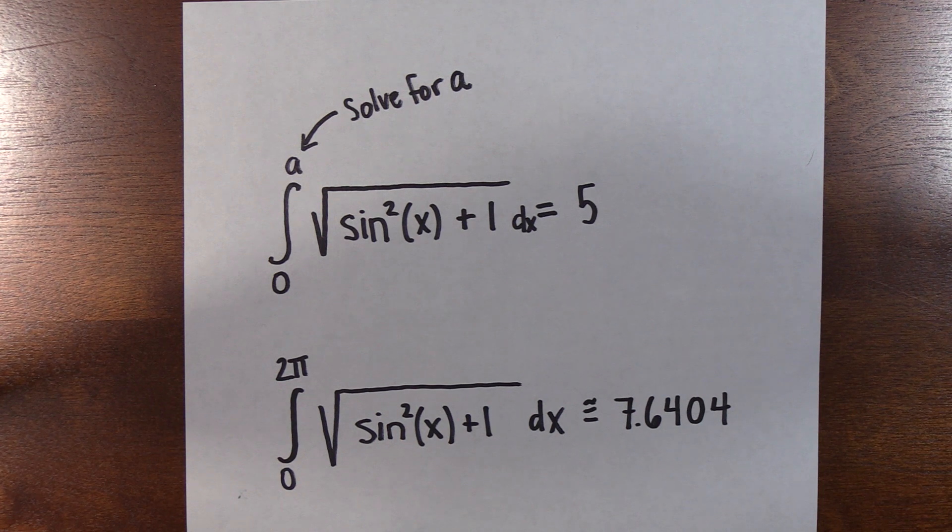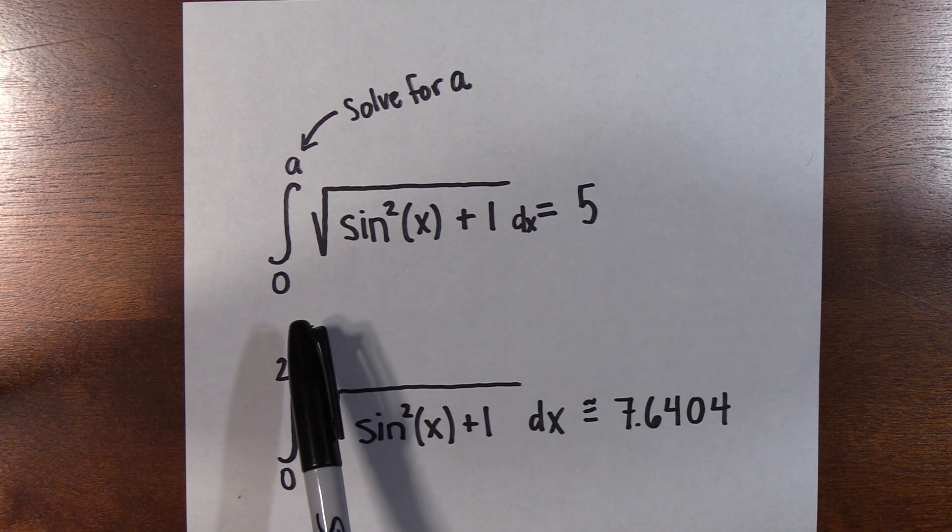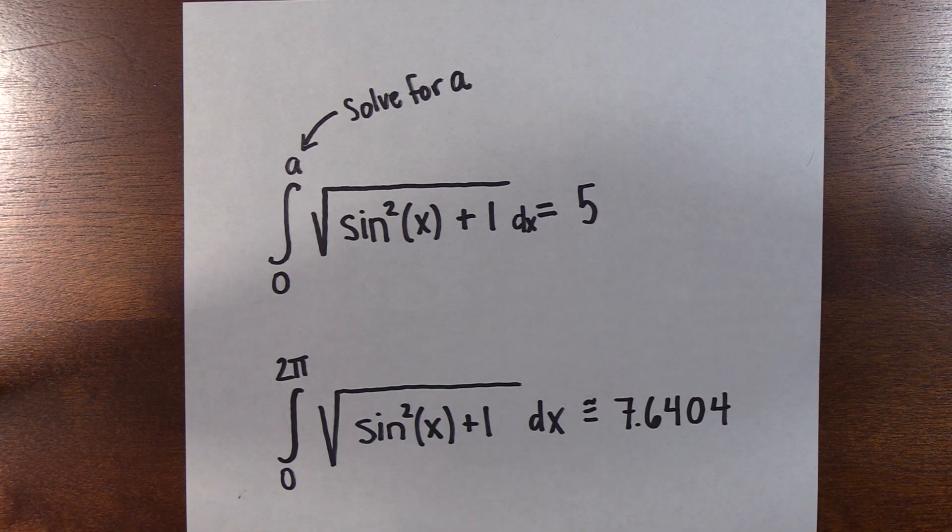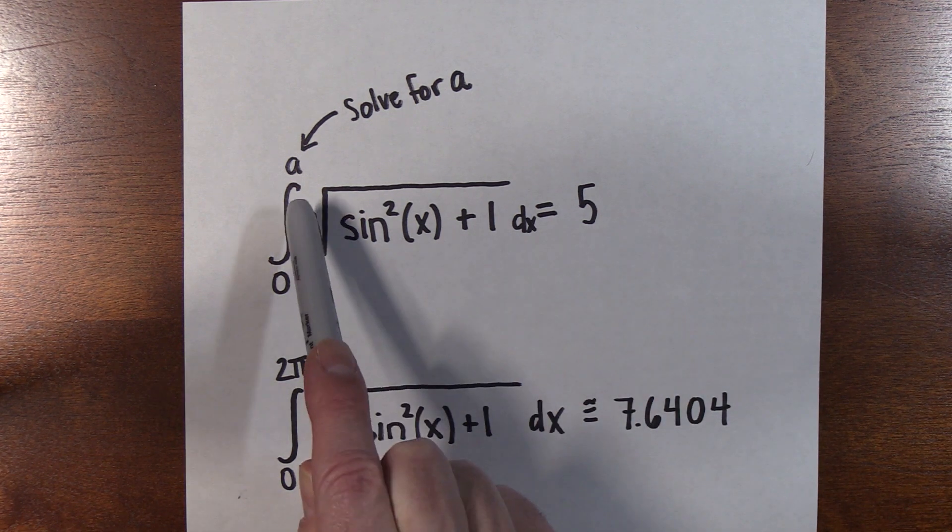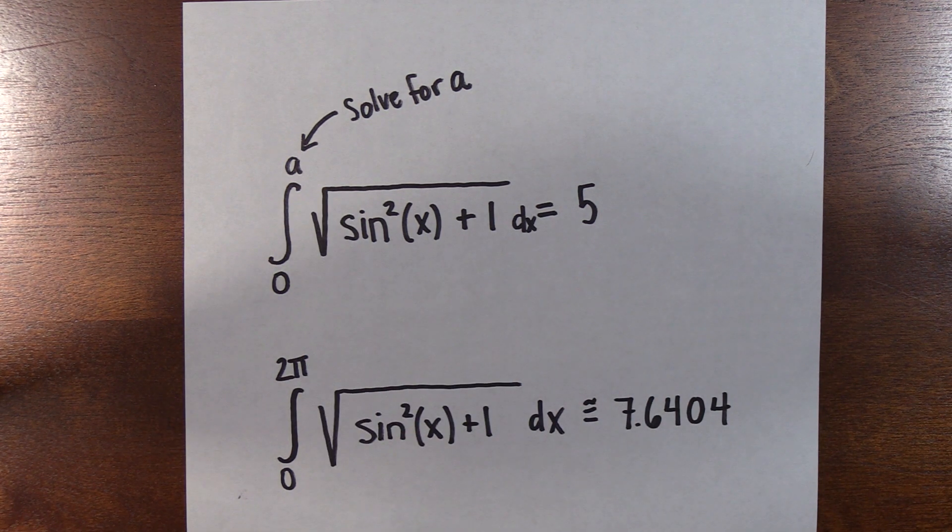But what if you wanted to solve a different problem, and you wanted to say, well wait, what a value, what upper limit would give this same integral or the area under the curve equal to 5? So here we know we want to get an area of 5, and we're curious what upper bound would produce that.